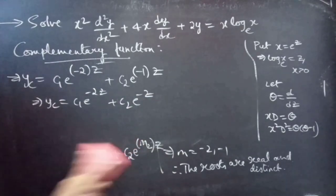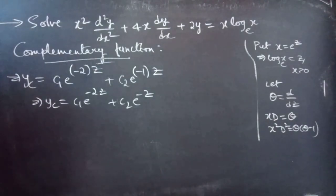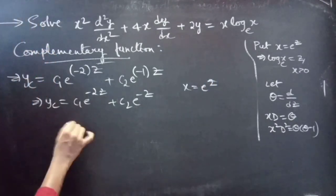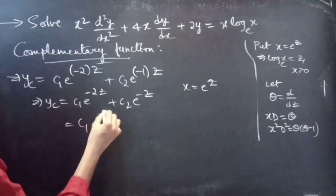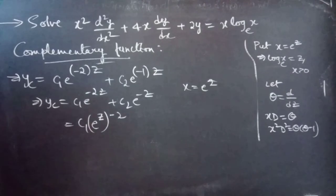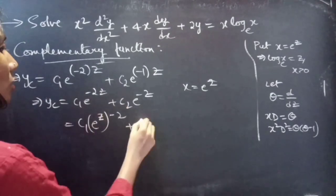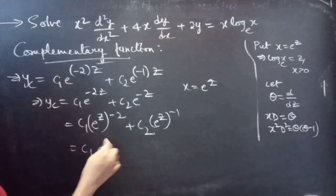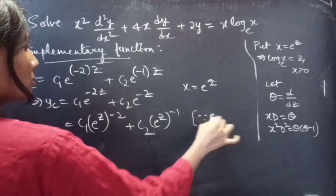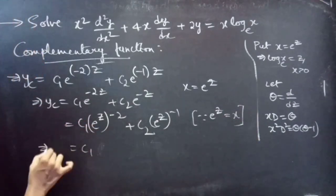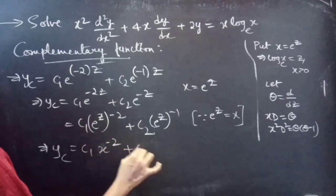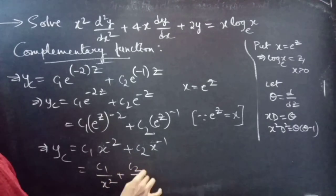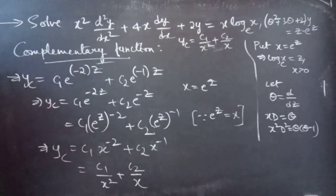We have yc in terms of z, so let's write it in terms of x. We know x = e^z, so e^(−2z) = (e^z)^(−2) = x^(−2) and e^(−z) = x^(−1). Therefore yc = c₁x^(−2) + c₂x^(−1) = c₁/x² + c₂/x.